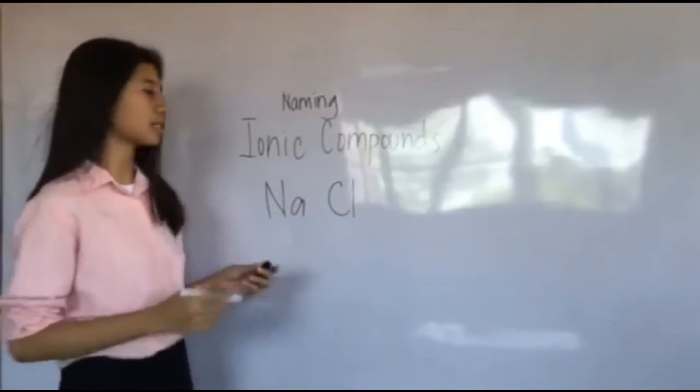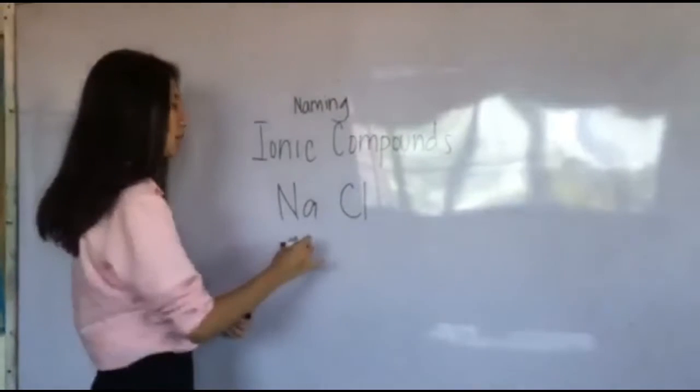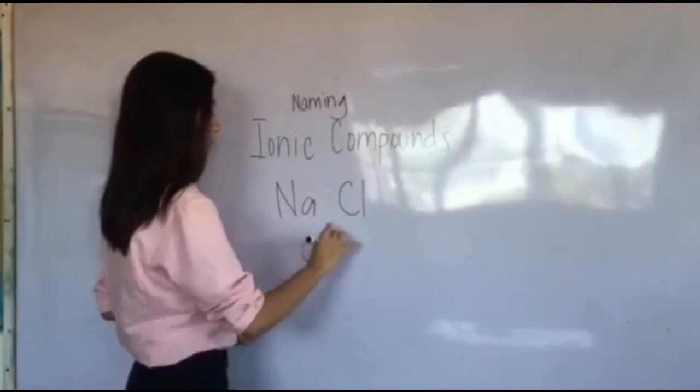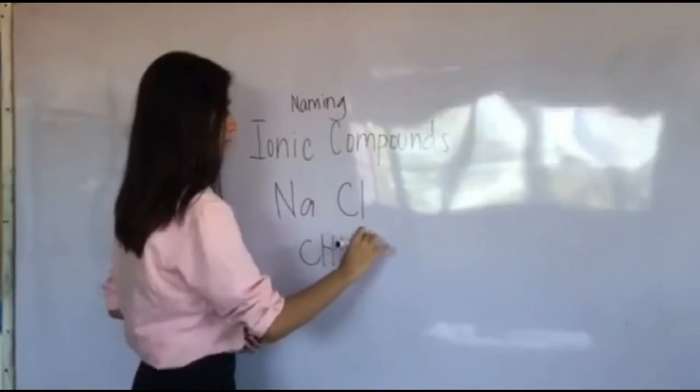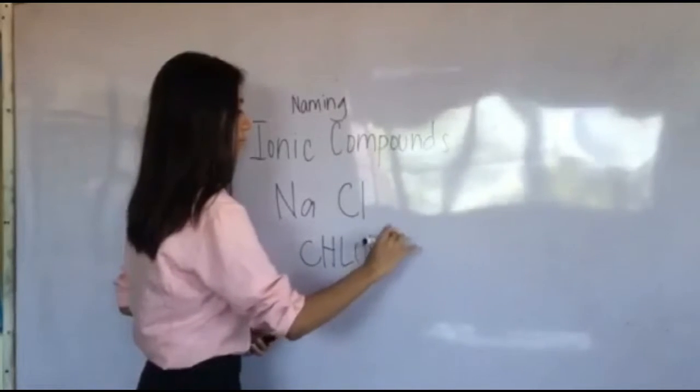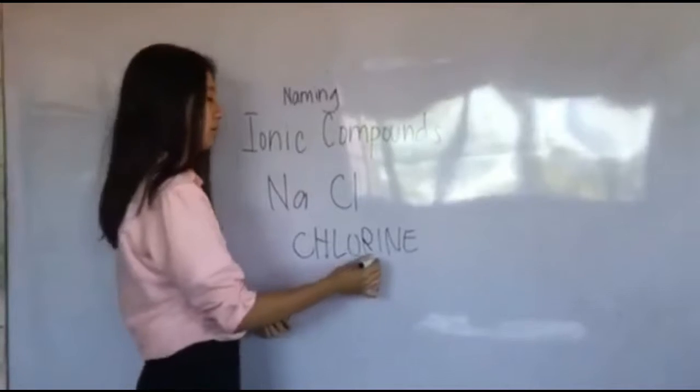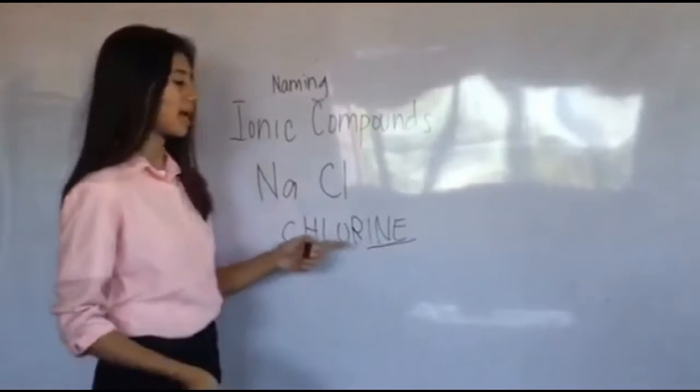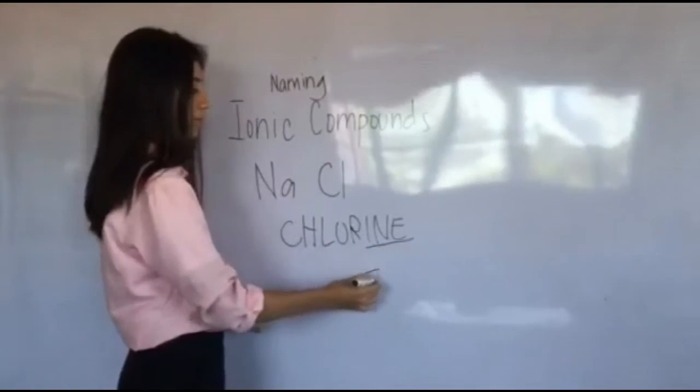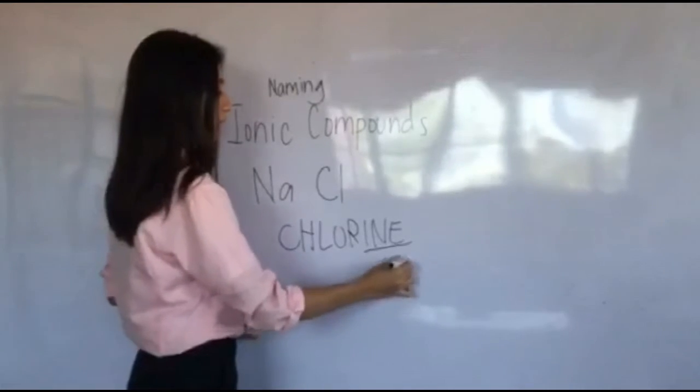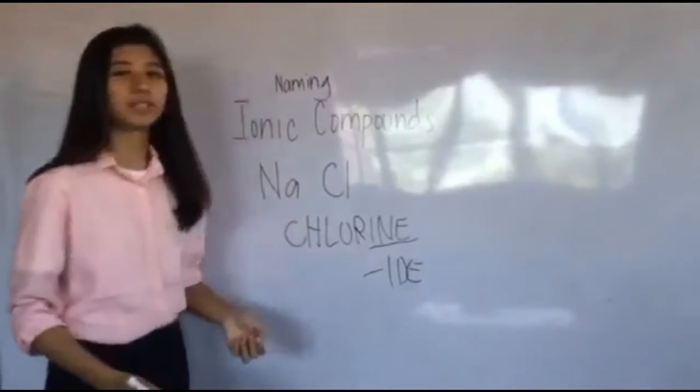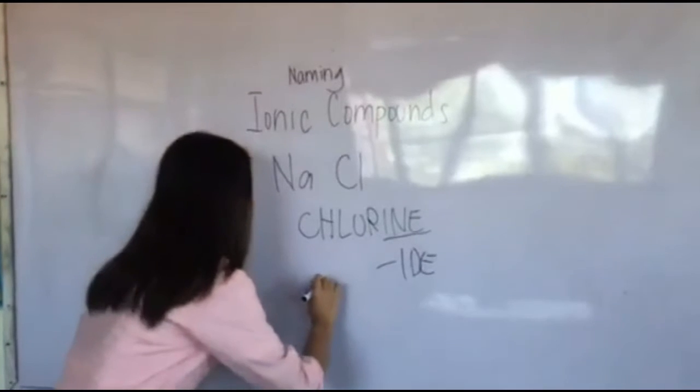We are just going to take the second element, which is chlorine, and change its three last letters, I-N-E, and replace with I-D-E, which is now chloride.